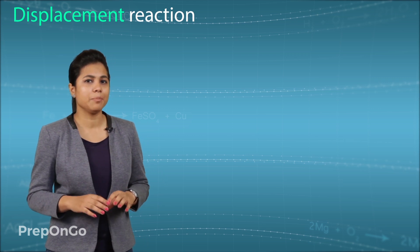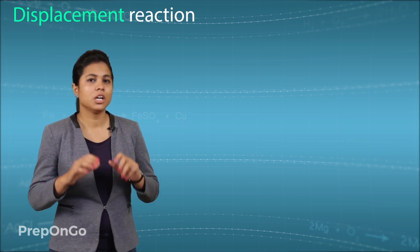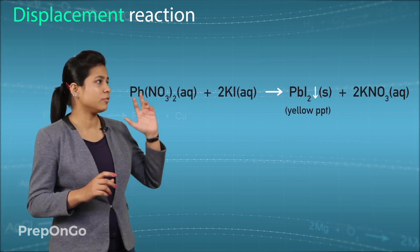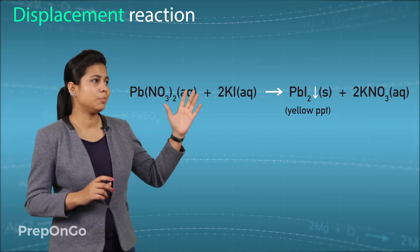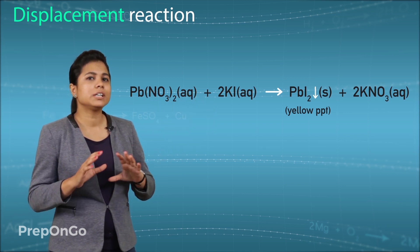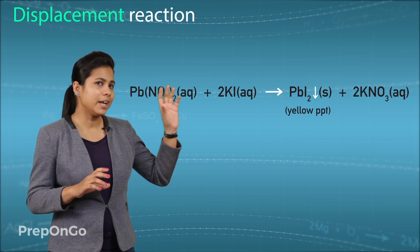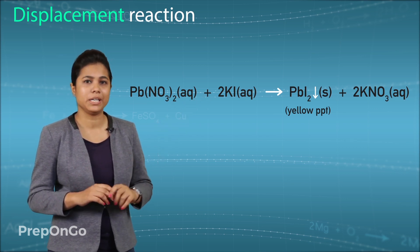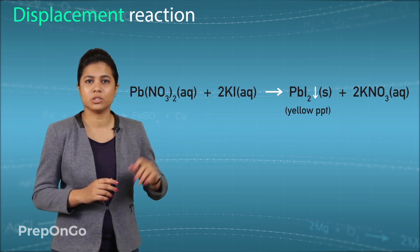Let's see another example of double displacement reaction which is the reaction of lead nitrate with potassium iodide. So it results in the formation of lead iodide which is in form of yellow precipitate and potassium nitrate solution.